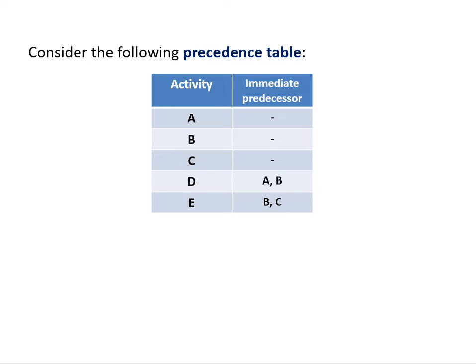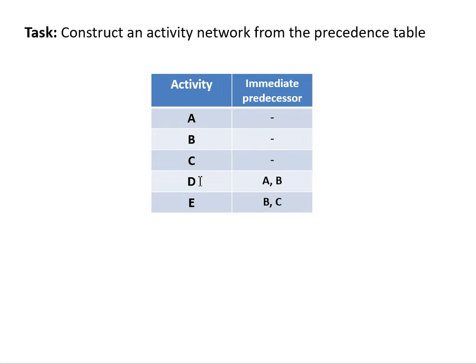So here we have our precedence table with a list of activities A to E, each representing a step in a project. On the right hand side we've got the immediate predecessors. These are the activities that have to be completed before the next activity can commence, and we'd like to construct an activity network from this particular precedence table.